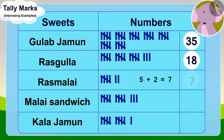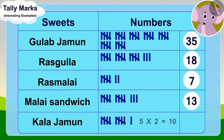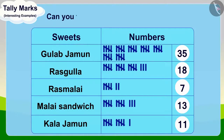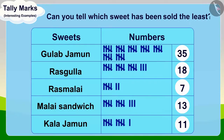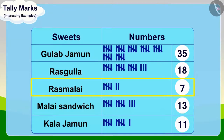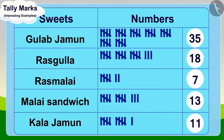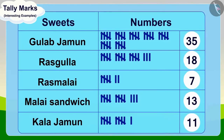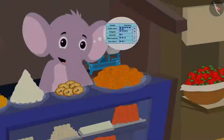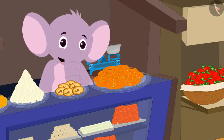Appu found the total number of the remaining sweets and completed the table. How many sweets have been sold the least? That's correct, RasMalai has been sold the least. And can you tell which sweets sold more than Malai sandwich? Yes, Rasgulla and Gulab Jamun were sold more than Malai sandwich. Appu was very happy to get this information using tally marks, and because Gulab Jamun were sold the most, he decided to make more of them the next day.